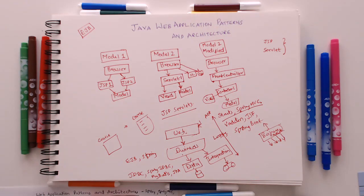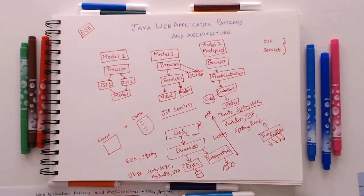This is the second video in our series on the evolution of Java architectures. In this video we talked about Java web application architecture. In the next video we'll cover web services — SOAP and REST — and over the next few videos we'll go into microservices, cloud, and full-stack development. If you like this approach of visually drawing diagrams, make sure to like the video and subscribe.